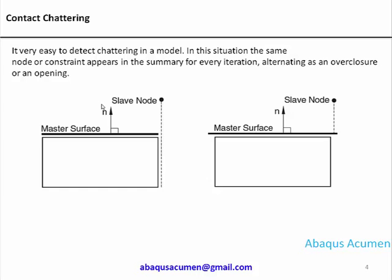Chattering of contact in Abaqus is very easy to detect. Once you look into the message file, for every contact iteration you can see over-closure or opening of the same node. For example, the slave node and master segment: for every iteration this node will go out of contact, and in the next iteration it will get back into contact. Abaqus handles this type of problem in different ways — one option is to extend the master surface by some amount using an extension zone, up to a 20 percent limit, to handle this chattering.